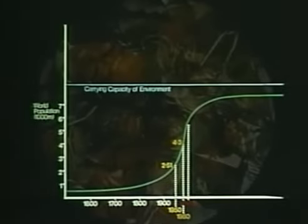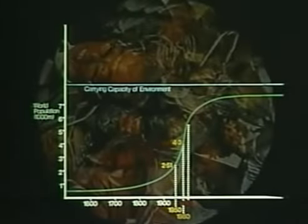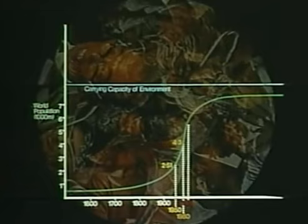We might then think of humanity as some sort of huge global brain — a brain in which we are the cells linked together by our growing information networks. And there are indeed some interesting parallels between the way society is developing and the way the human brain develops.